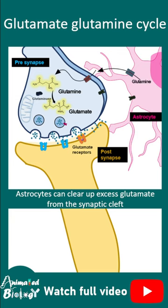Astrocytes actually provide glutamine. But how does the astrocyte make glutamine? The astrocyte uptakes excess glutamate with the help of excitatory amino acid transporter, and that glutamate gets converted to glutamine with the help of glutamine synthetase.